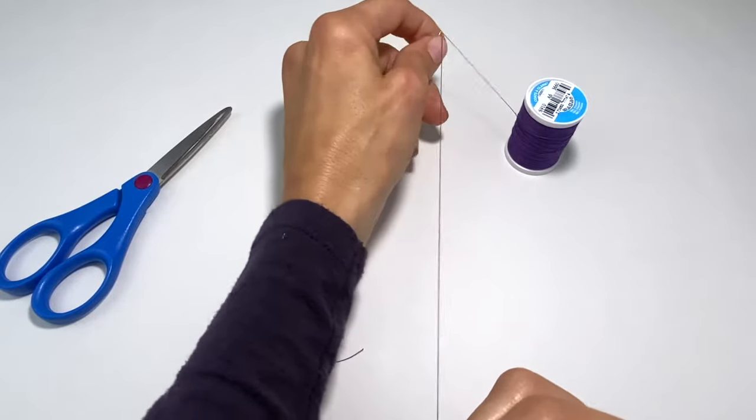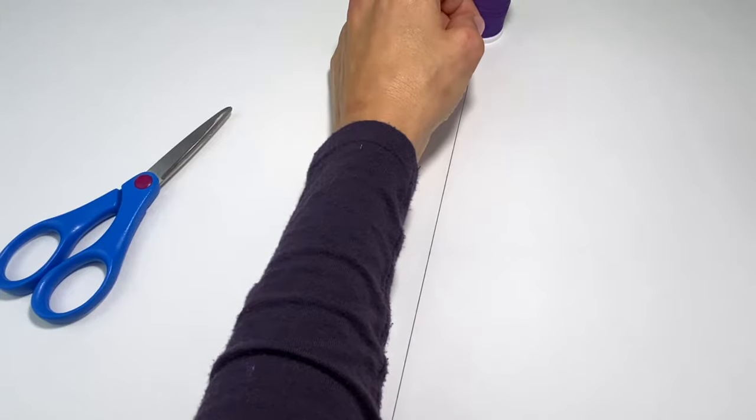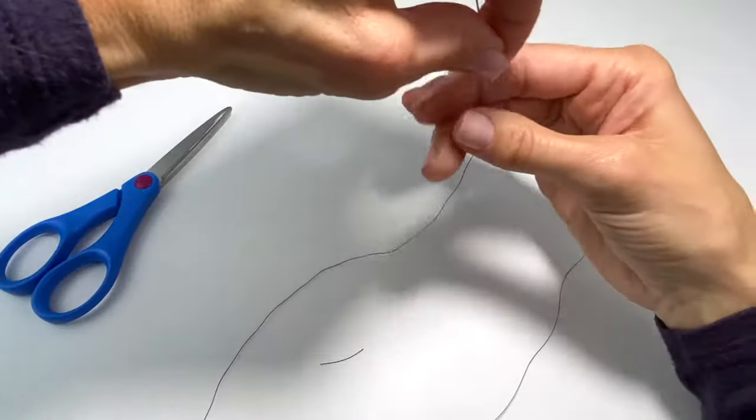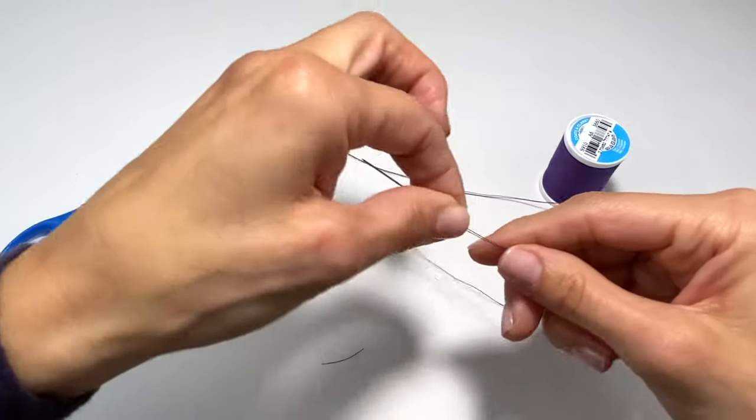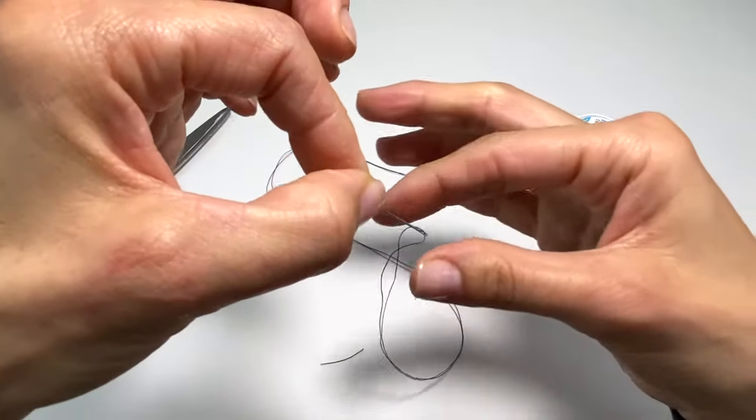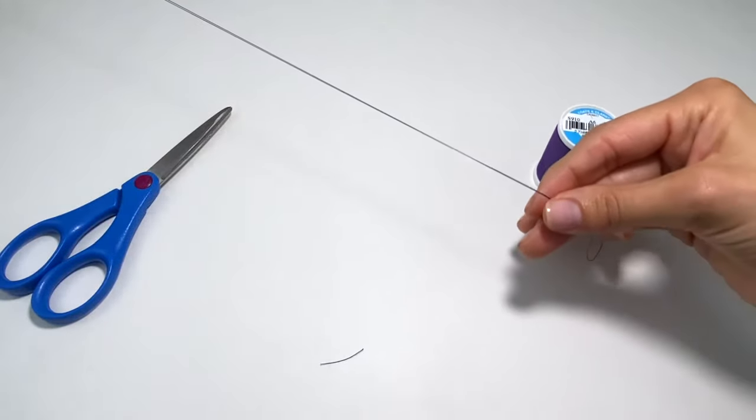You pull it through and you're going to need about your arm's length. Measure all the way up to your arm, hold it up, and you're going to have your double threaded needle. So it means on your needle you have two threads even though you didn't do any cutting yet—it's double threaded.